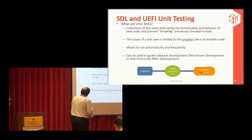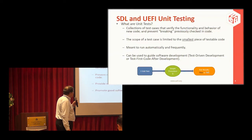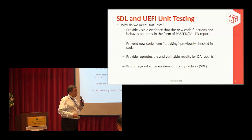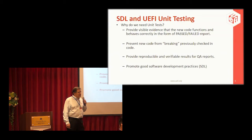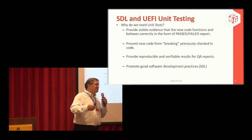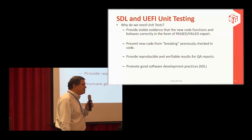The unit test provides visible evidence that new code functions and behaves correctly in the form of a simple binary answer — pass or fail. It prevents new code from breaking previously checked-in code. You wouldn't believe the number of times change logs say a change was made to correct something from a previous change that broke something unintentionally. Unit tests are designed to prevent that from happening.